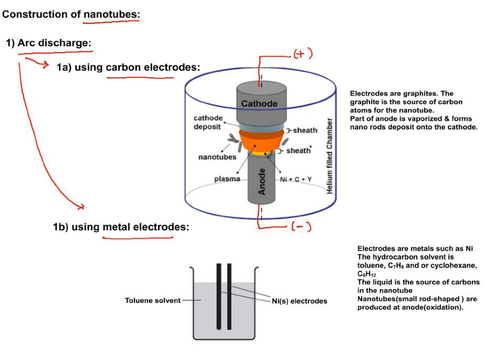Now, the source of the nanotube itself is the anode. The anode is going to be vaporized, and you're going to make this rod shape of nanotubes being accumulated on it.